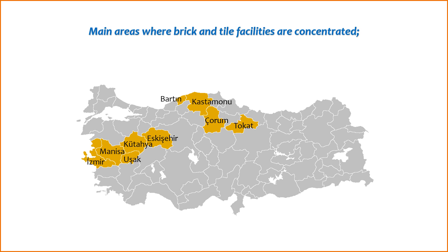Brick and tile facilities in Turkey are concentrated in various regions, with the industry having a presence in both urban and rural areas. Main areas include: 1. Marmara region — including cities like Istanbul, Bursa, and Kocaeli, this is a significant industrial hub. The presence of construction projects and urban development contributes to the demand for bricks and tiles. 2. Central Anatolia region — cities like Ankara, the capital of Turkey, and Konya. This region's central location and economic activities make it a key area for construction materials, including bricks and tiles.